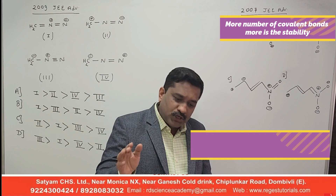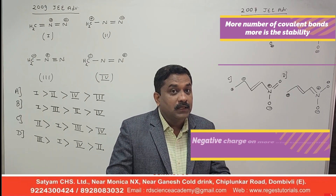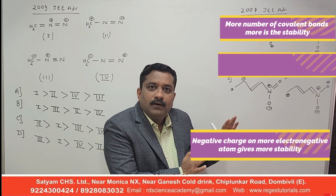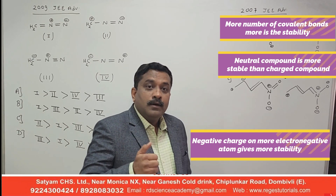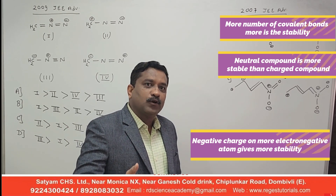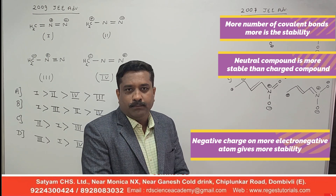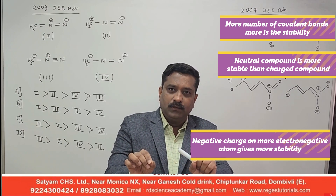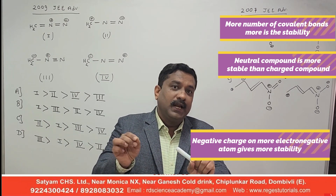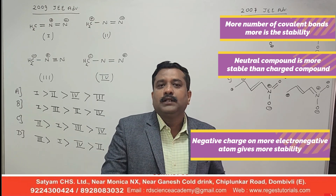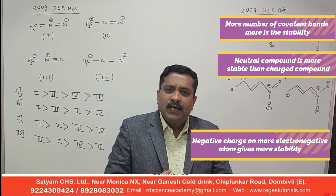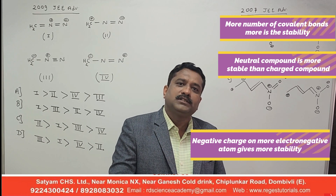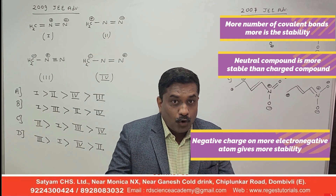If both compounds are charged, the third rule gets activated. Rule 3: if a negative charge is present on a more electronegative atom, that compound is more stable. Check both charged compounds — where the negative charge is placed. If the negative charge is on the more electronegative element, that structure gets more stability. Vice versa, a more electropositive element bearing a positive charge gives more stability.